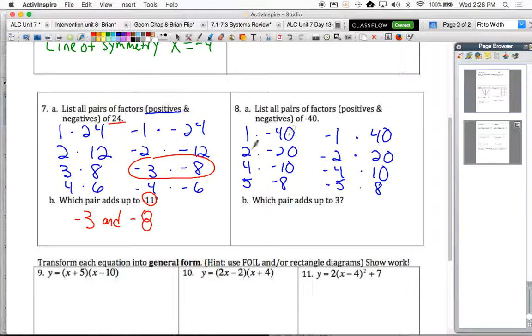So just like the last problem, we actually have 8 pairs of factors that would multiply to negative 40. And once again, we'll ask ourselves, which one of those pairs adds up to positive 3? This kind of looks close, but notice 5 and negative 8 would add up to negative 3. So actually, it's this one right over here. Negative 5 and 8 would be the factors that would add up to positive 3.